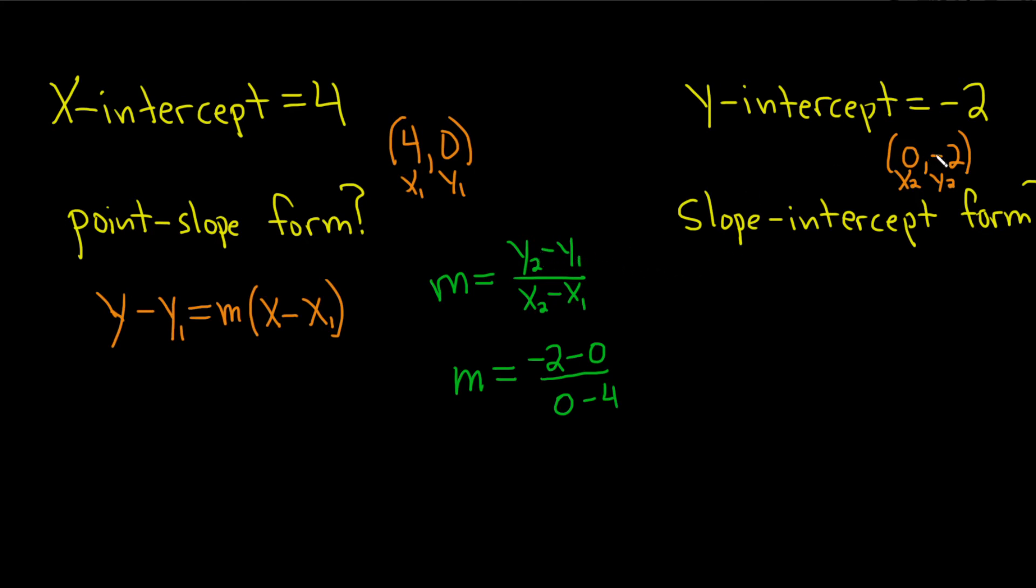Let me just double check that. Y2 minus y1: negative 2 minus 0. X2 minus x1: 0 minus 4. Okay, it looks okay.